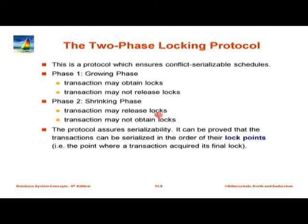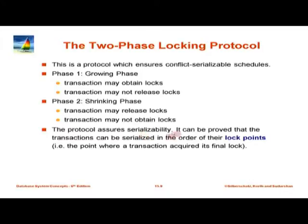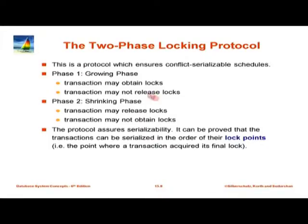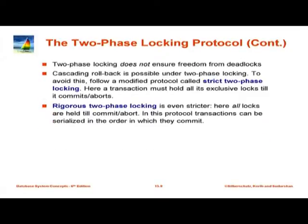The basic idea is simple: in the initial phase you can ask for locks; later on you can release them but cannot ask for any new locks. This particular protocol can be shown to ensure serializability. It is actually easy to show that transactions can be serialized in the order of their lock point. The lock point is the point where the transaction acquired its final lock — any point from the last lock acquire to the first lock release is fine as the lock point. Transactions can be serialized in the order of their lock point.